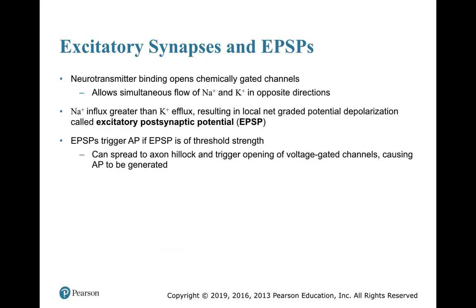In excitatory synapses, neurotransmitters open chemically-gated channels allowing sodium and potassium to move in opposite directions. Sodium influx is greater than potassium efflux, producing a net excitatory postsynaptic potential. If enough EPSPs accumulate to reach threshold, the signal spreads to the axon hillock, triggering voltage-gated channels to open and generating an action potential that travels down the axon of the postsynaptic neuron.